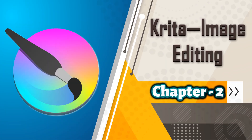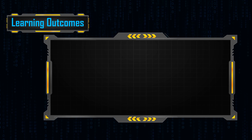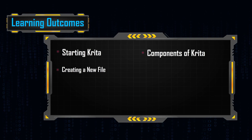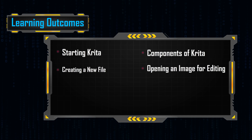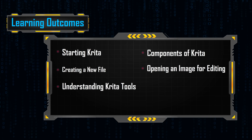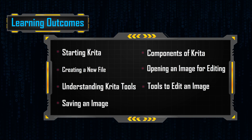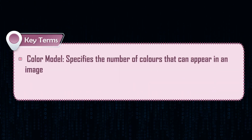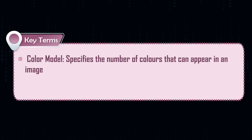Chapter 2: Krita Image Editing. Learning Outcomes: Starting Krita, Components of Krita, Creating a New File, Opening an Image for Editing, Understanding Krita Tools, Tools to Edit an Image, Saving an Image. Key Terms — Color Model: Specifies the number of colors that can appear in an image.